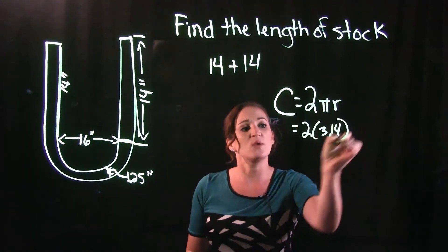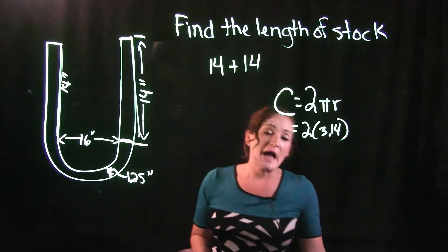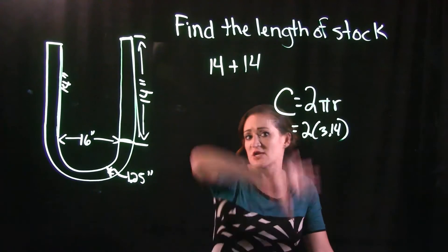So 2 is part of the formula, π is 3.14, we just need to plug in for r. Also, this formula here is circumference of an entire circle.